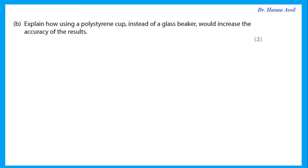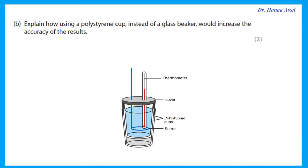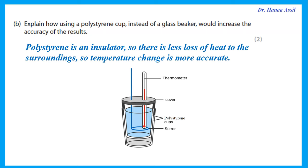Explain how using a polystyrene cup instead of a glass beaker increases accuracy. Polystyrene is an insulator, so there is less loss of heat to the surroundings. This means the temperature change measured is more accurate.